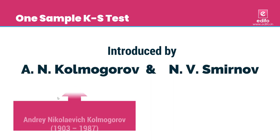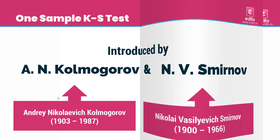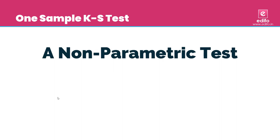This test is introduced by two eminent Russian mathematicians, A.N. Kolmogorov and N.V. Smirnov. It was first introduced by Kolmogorov in 1933 and later improved by Smirnov in 1939. It is a non-parametric test.